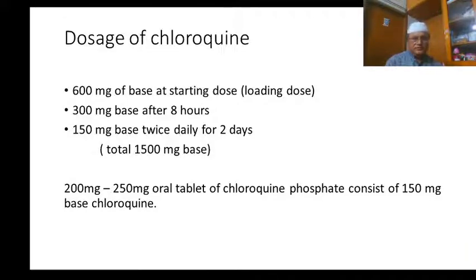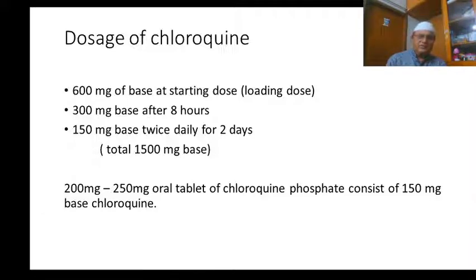The 'base' refers to chloroquine only — without the salt. Chloroquine phosphate is the formulation. A 250 mg oral tablet of chloroquine phosphate consists of 150 mg base chloroquine; one tablet contains 150 mg base chloroquine, and the remaining 50–100 mg is phosphate.